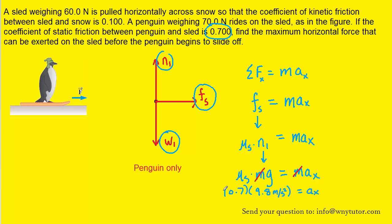Plugging in the known values, the acceleration turns out to be 6.86 meters per second squared. That acceleration not only applies to the first free body diagram, but it will also apply to the second free body diagram. So let's bring that diagram back into the picture.